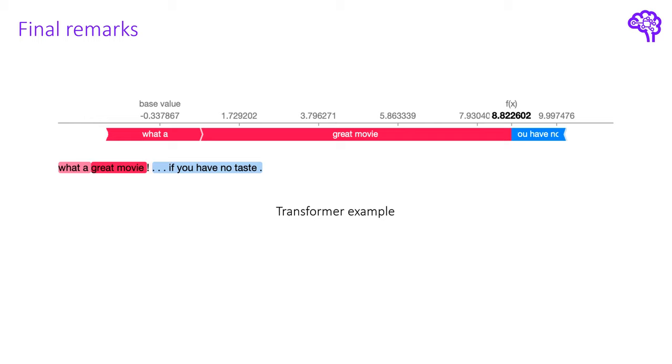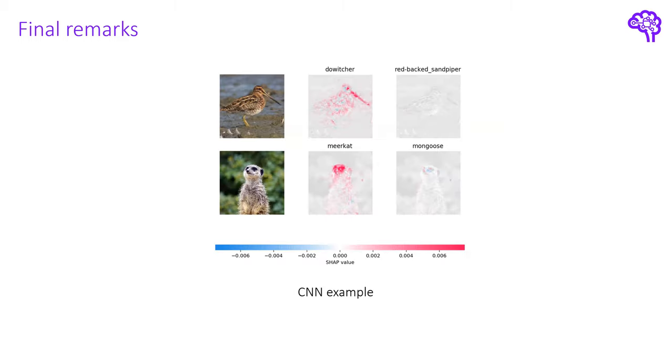And as you can see this library provides many ways to visualize the Shapley values. So the example we've seen was based on tabular data however Shap can also be applied on other data types. Here is an example for a transformer model that means for text data input, or here is another example from the github project where Shap is applied on image input. So I can recommend to check out the github page, there are also many notebooks linked if you're interested in further details.